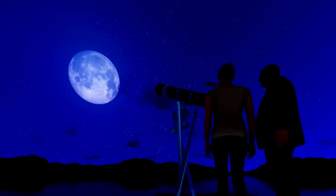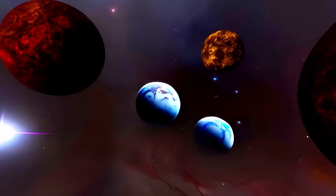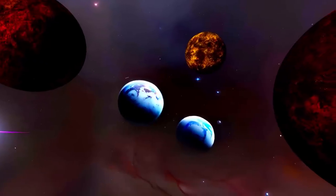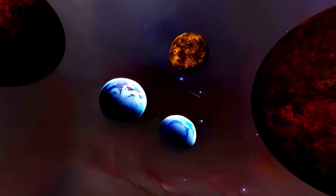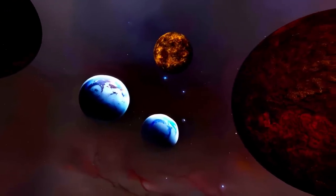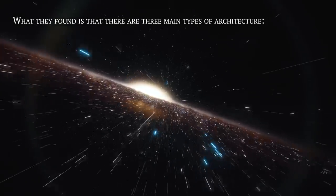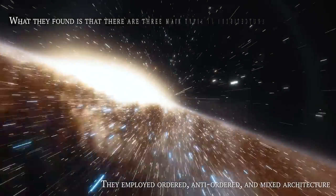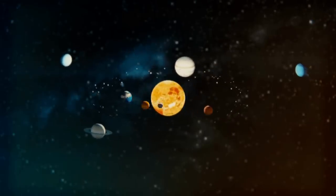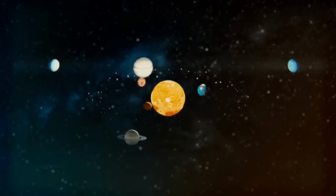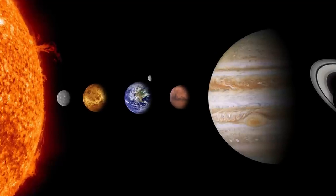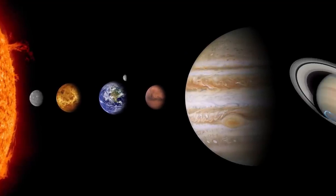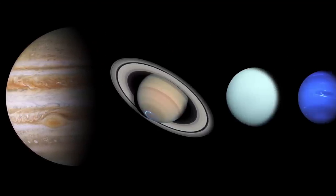Employing an architecturally significant rule, a mathematical model was employed in this study to generate various star system configurations and determine the likelihood and commonality of their occurrence. What they found is that there are three main types of architecture: ordered, anti-ordered, and mixed architecture. The ordered architecture is proper of the systems similar to the solar system. The small, rocky planets are the closest to the sun and as you move to the outskirts you find the gas giants.